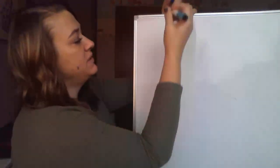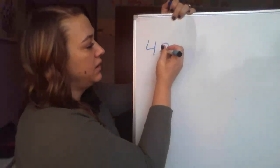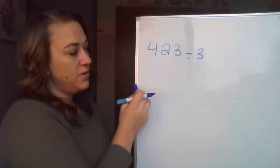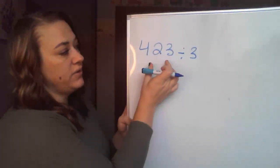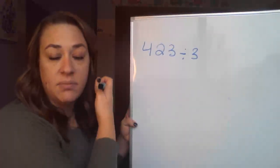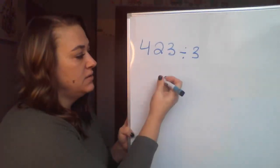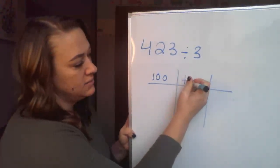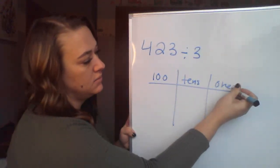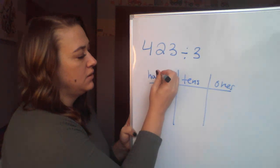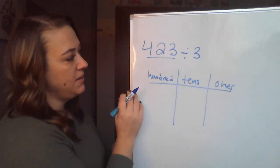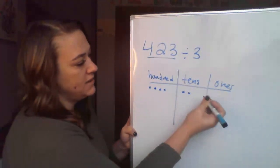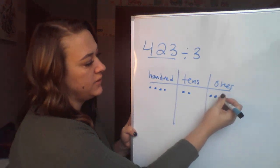Our first problem today is 423 divided by 3. So we're going to see how we divide 423 into three groups. How much is going to be in each group? So if I have hundreds, tens, and ones, what we want to do first is represent our dividend. I have 1, 2, 3, 4 hundreds. I have two tens, and I have one or three ones.